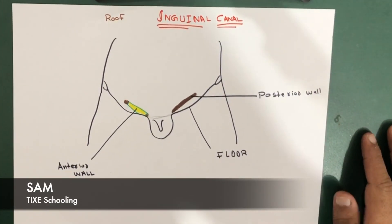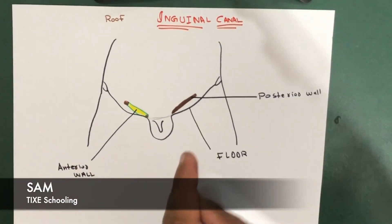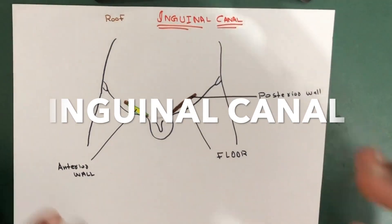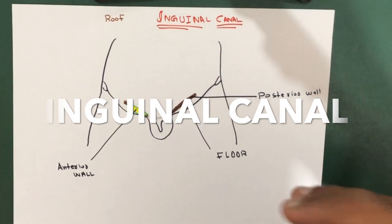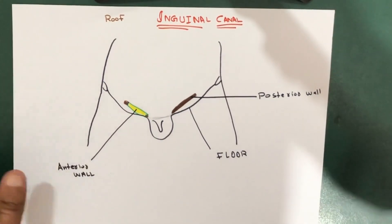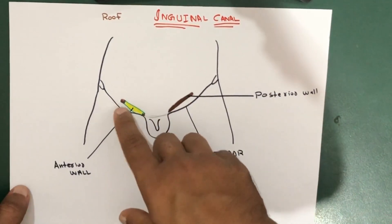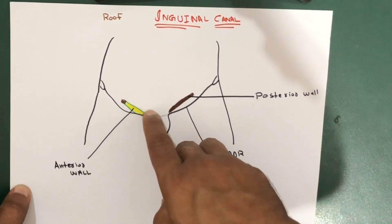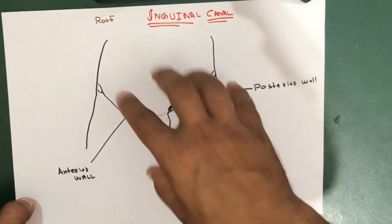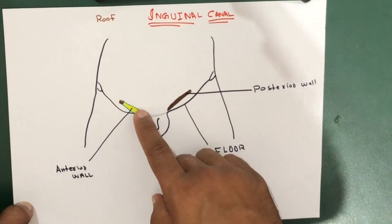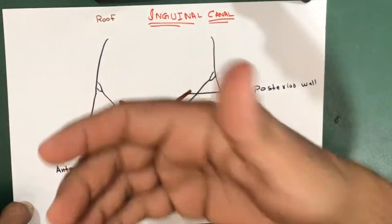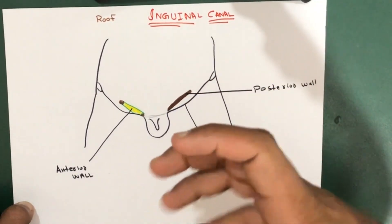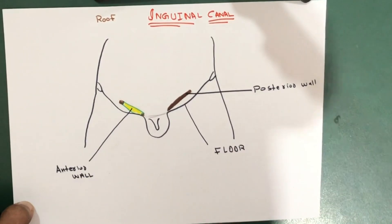Hello YouTube, this is Sam from Thai XS Schooling. In this session we're going to talk about the inguinal canal. The inguinal canal is a short passage that extends inferiorly and medially through the inferior part of the abdominal wall — it's a passage through which different structures pass.